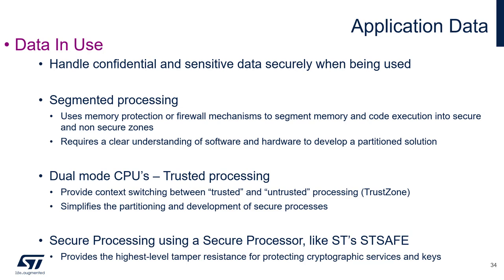Applications must handle sensitive data that must be protected. This requires some form of secure or trusted processing where sensitive data and associated code can be partitioned and kept separate from the main application code. Segmented processing requires manual separation of trusted and untrusted functions. Creating partition solutions requires a clear understanding of the software and the microcontroller's memory protection unit or firewall. Dual mode CPUs provide context switching between trusted and untrusted processing, which can simplify partitioning and development. The most secure processing uses a secure processor or secure element like ST's ST-Safe, which provides the highest level of tamper resistance for protecting cryptographic services and keys.